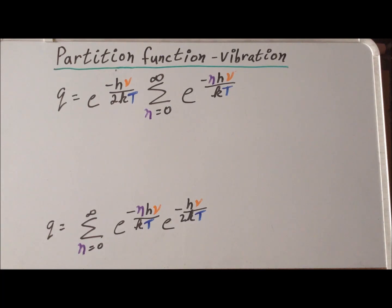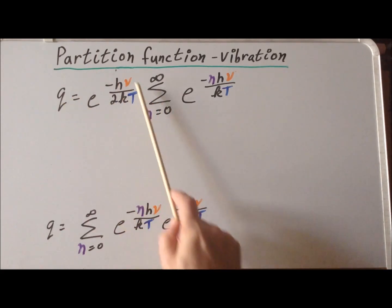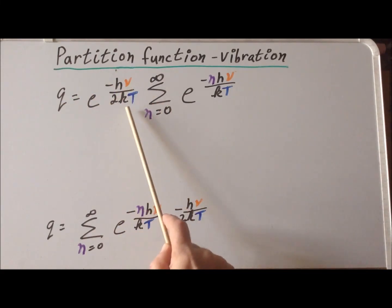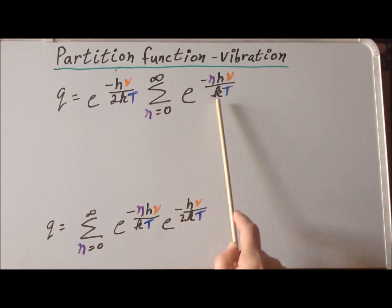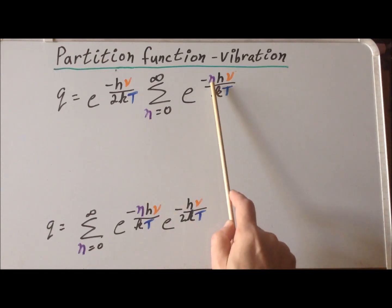We notice that the second exponential has no terms that depend upon n, which is our summation index. Therefore, we would consider this particular expression as a constant and we can pull it through, put it in front of the summation sign in the same way that we can pull a constant through an integral sign. Once we do that, we get this particular expression where now the e to the minus h nu over 2kT is in front of the summation sign. We have to keep this expression behind the summation sign because it includes the summation index n.